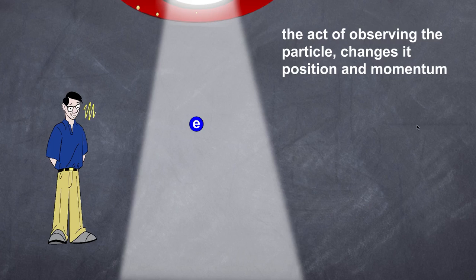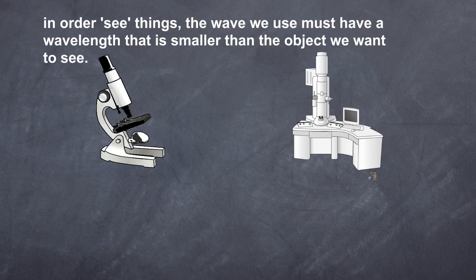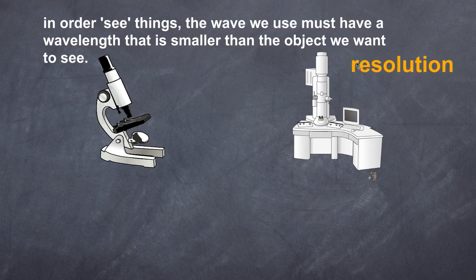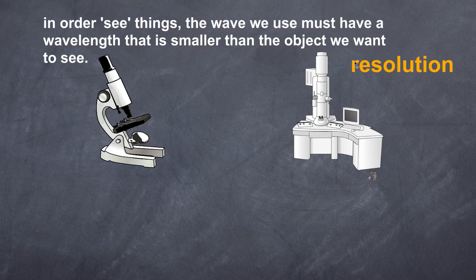Before we talk more about the photon itself, I want you to understand an important term called resolution. Resolution is the way that we can see things clearly. The way we see things clearly is because the thing we use to observe something has a wavelength significantly smaller than the object we want to see. As we start to look at smaller and smaller things, we find less clarity in the way we see them.